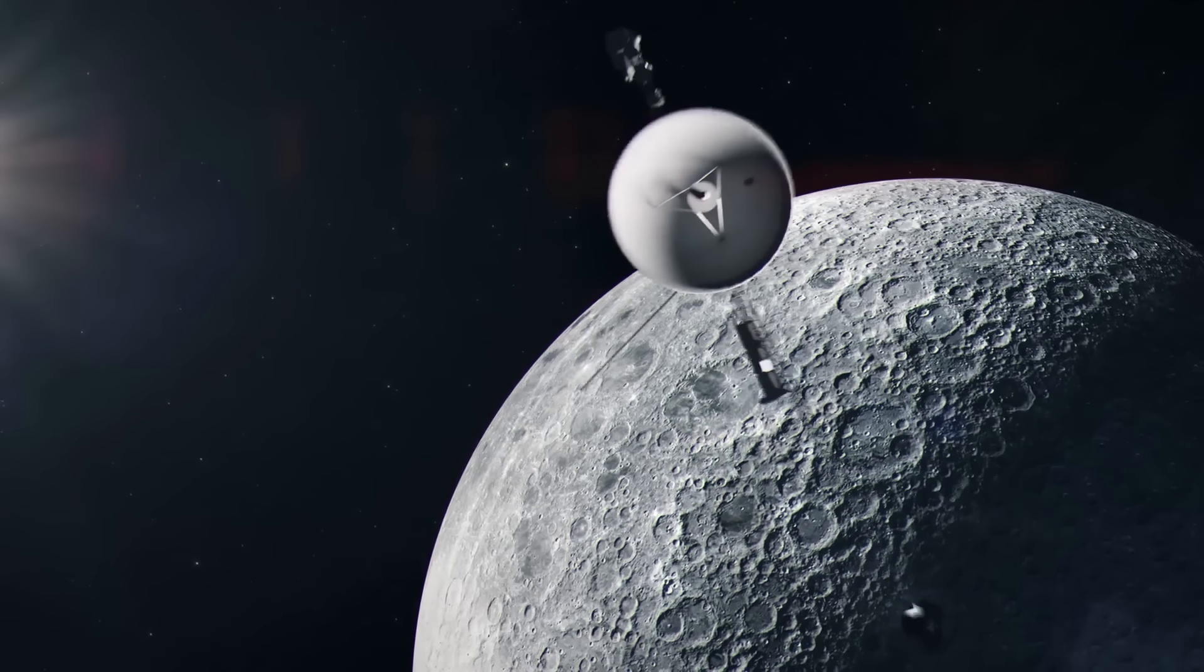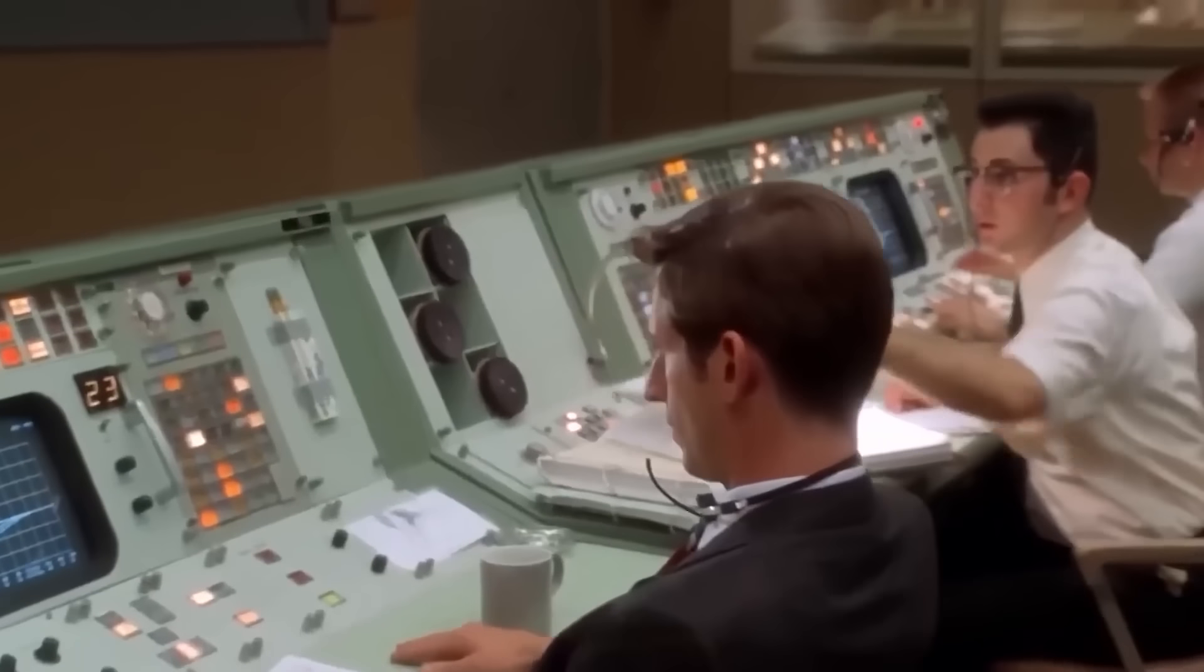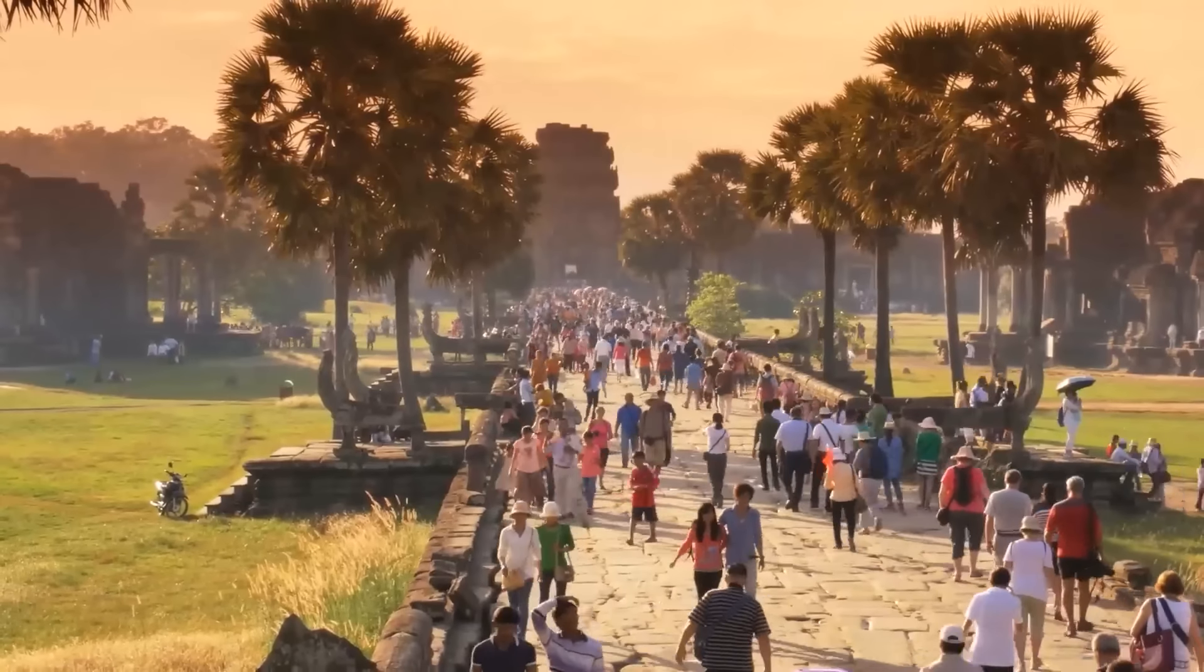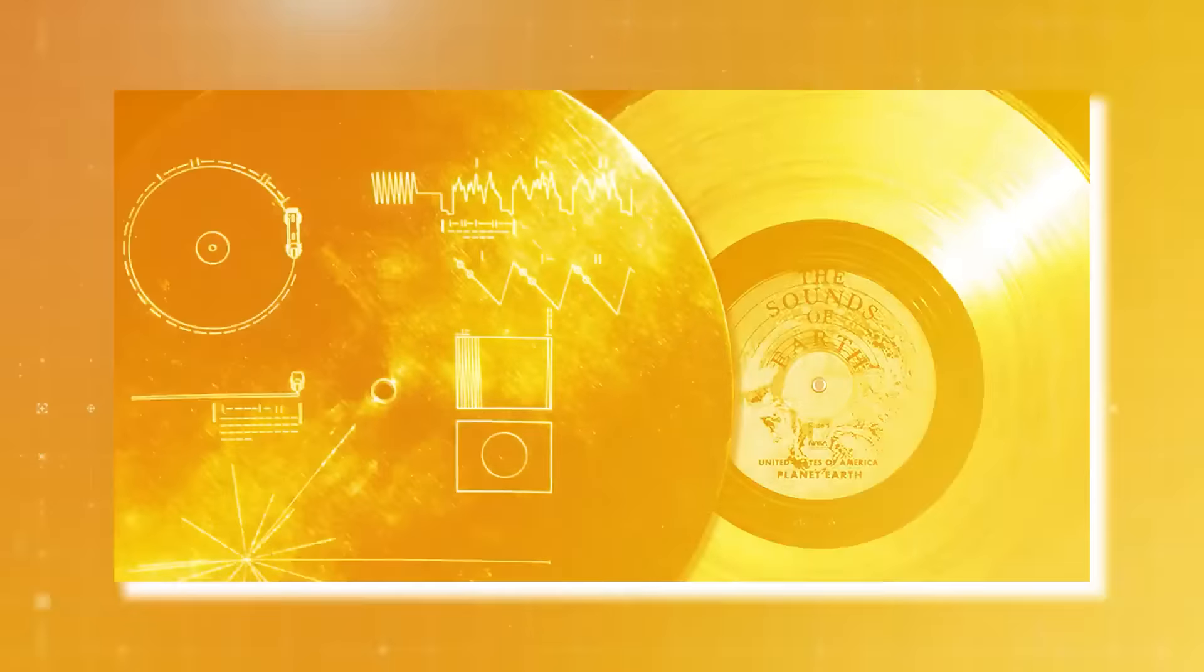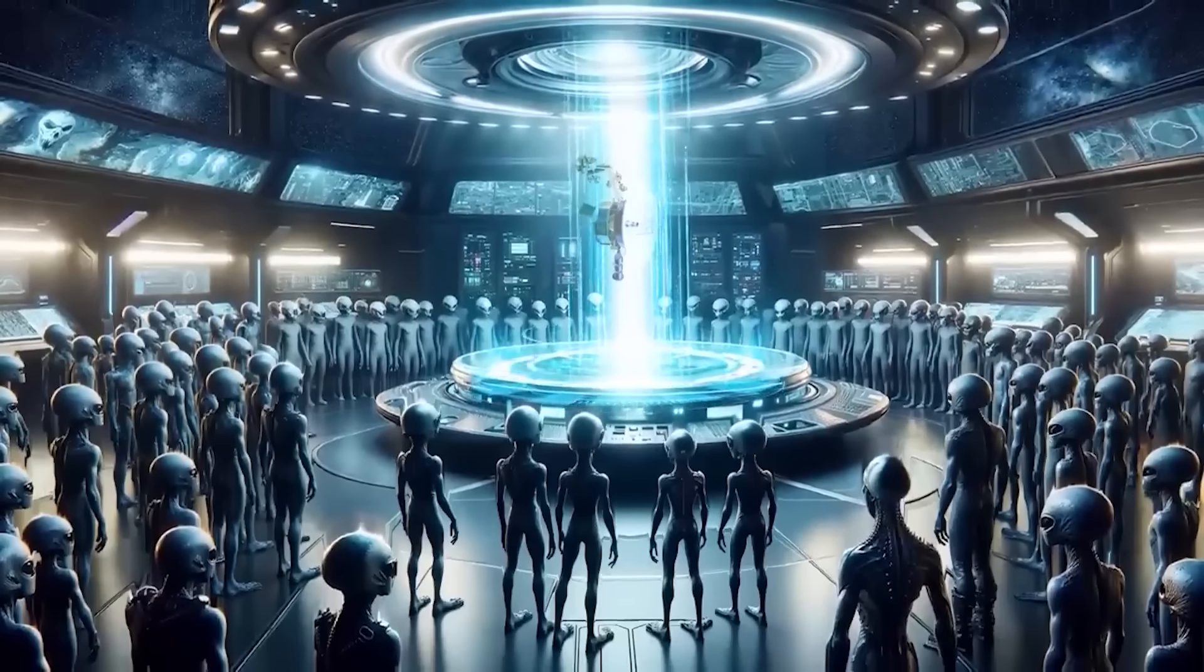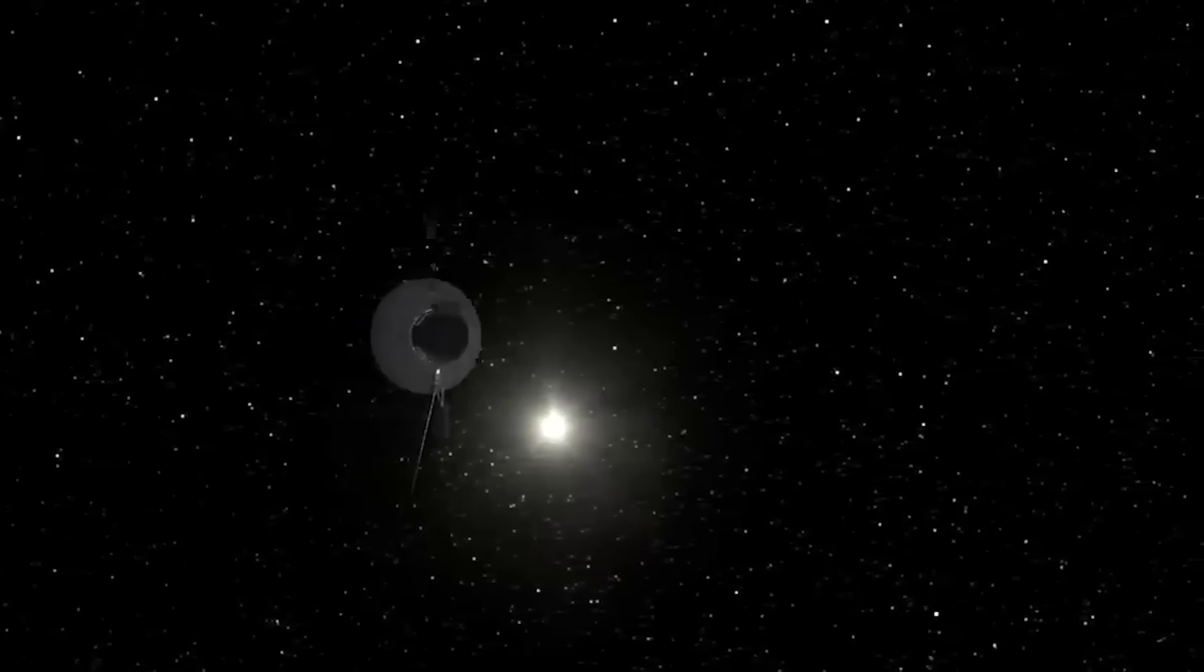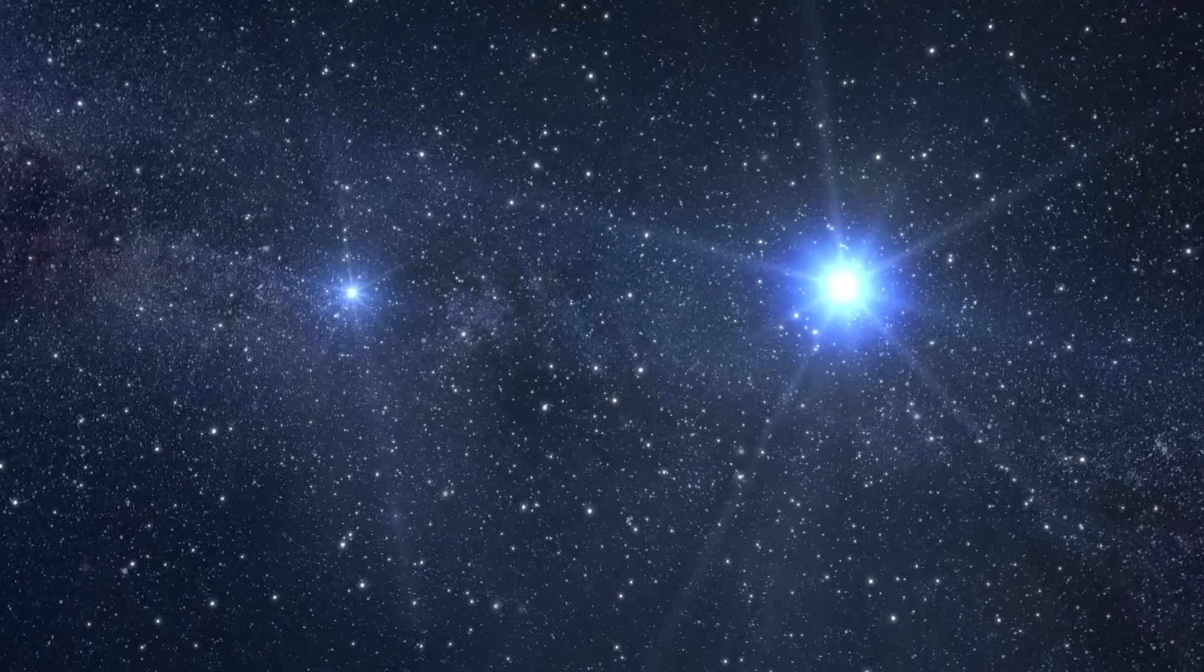Beyond sounds, the record also contains 116 images that depict Earth's natural wonders, scientific achievements, and human activities. These images, carefully selected to convey a sense of who we are and what we have accomplished, offer a visual representation of our civilization. The Golden Record is more than just a scientific experiment. It's a reflection of humanity's curiosity and our desire to connect with the unknown. It is a symbol of our hope that one day, we might find a kindred spirit in the vastness of the cosmos. As the Voyager spacecraft continue their journey into interstellar space, the Golden Record stands as a silent ambassador, carrying our story to the stars.